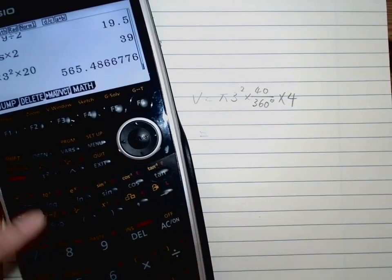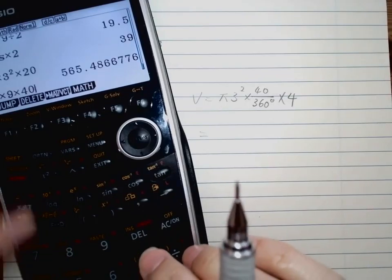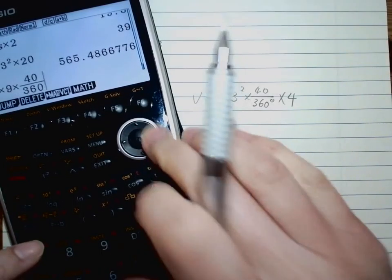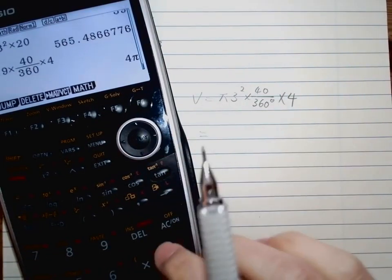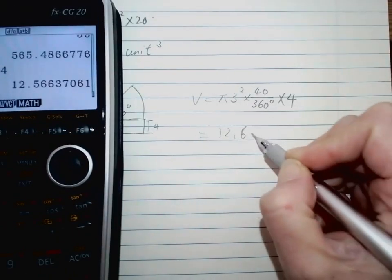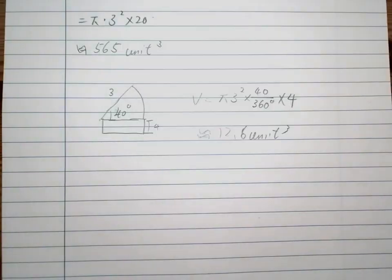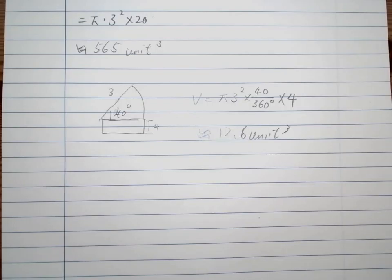And I got 12.6 unit cube. Okay, sorry, this is approximately equals to. And this is our basic, not basic, that's the volume of a prism.